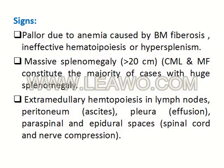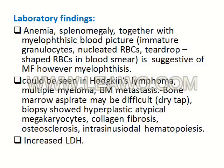Signs include pallor due to anemia, causing pulmonary fibrosis, and massive splenomegaly of more than 20 cm. Extramedullary hematopoiesis may occur in lymph nodes, peritoneum, and spleen. Laboratory findings include anemia and splenomegaly together with a leukoerythroblastic blood picture: immature granulocytes, nucleated RBCs, and tear-drop cells (dacrocytes) on blood smear — suggestive of myelofibrosis. Note that myelofibrosis can also be found in Hodgkin lymphoma, multiple myeloma, and bone marrow metastasis. Bone marrow biopsy may be difficult and yield a dry tap. Biopsy shows hyperplastic atypical megakaryocytes, collagen fibrosis, osteosclerosis, and intrasinusoidal hematopoiesis. Lactic dehydrogenase is increased.